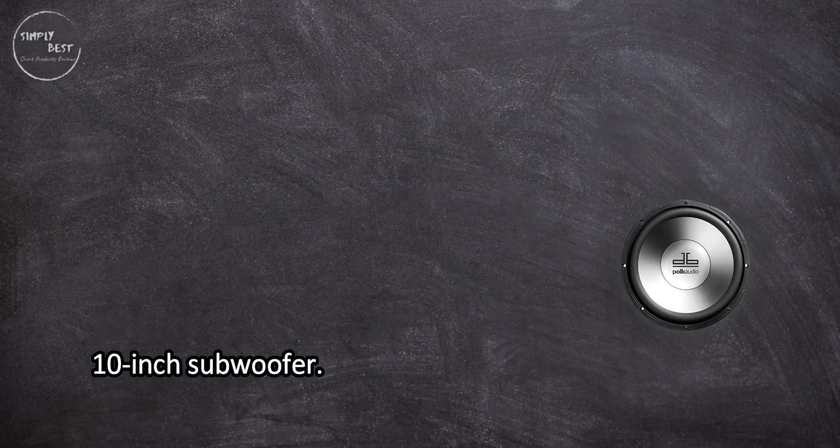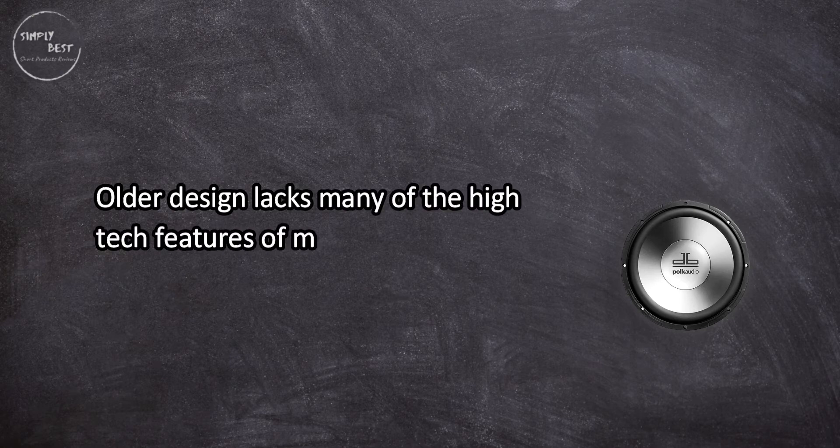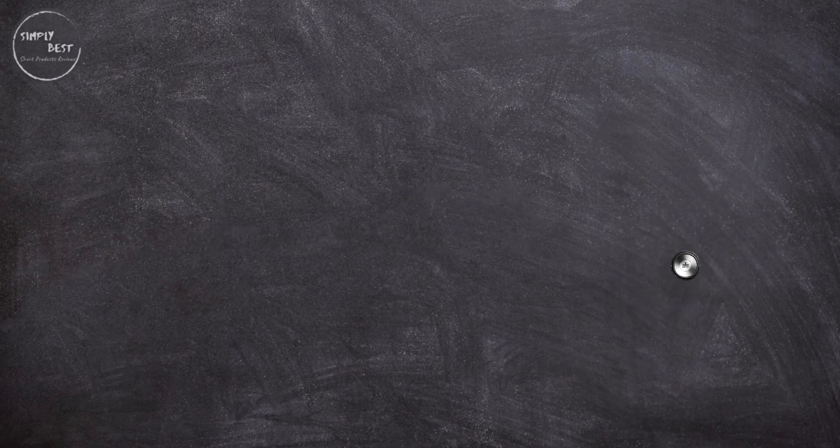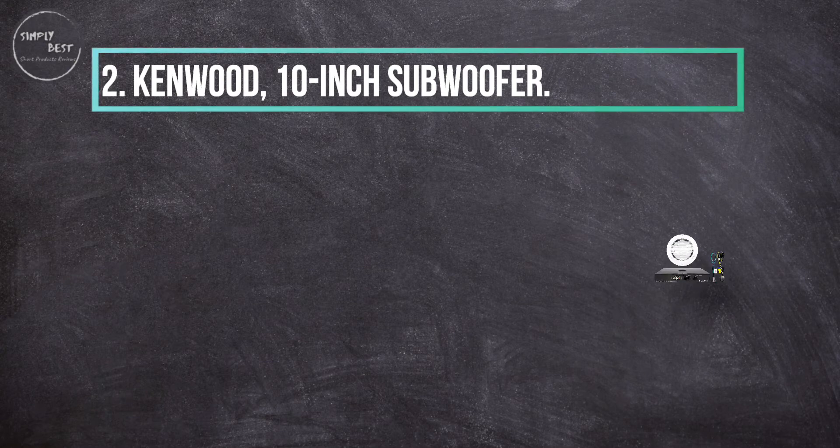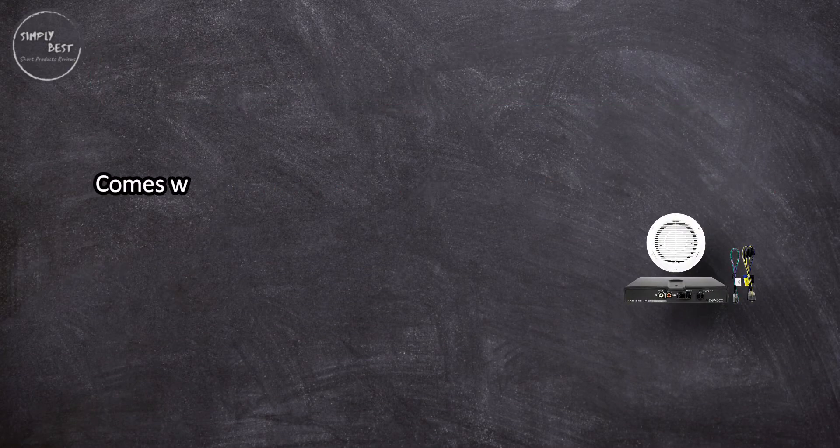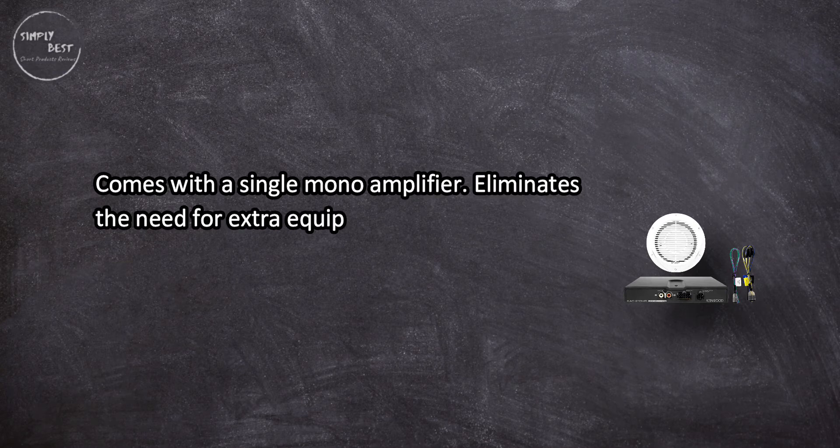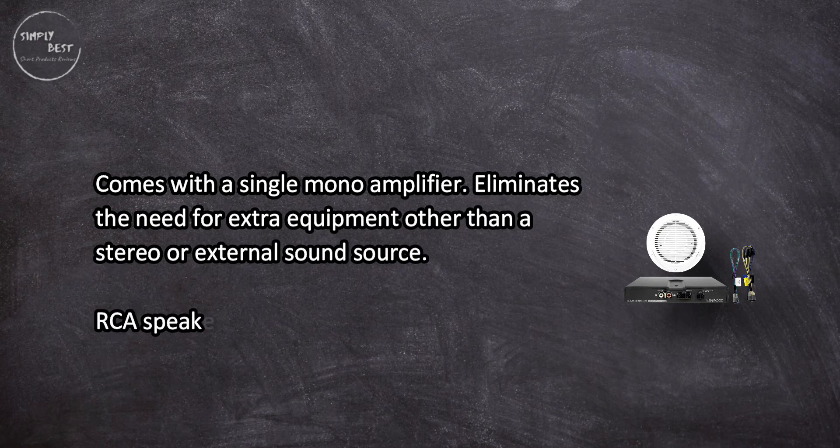At number 2, Kenwood 10-inch subwoofer comes with a single mono amplifier, eliminates the need for extra equipment other than a stereo or external sound source. RCA speaker level inputs, vented voice coil, includes the necessary mounting hardware and fasteners.